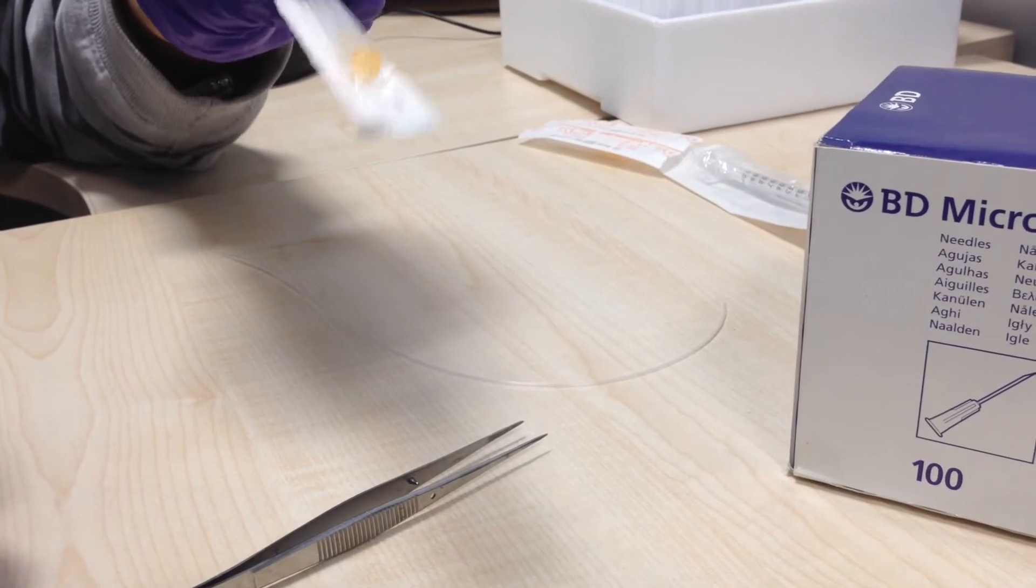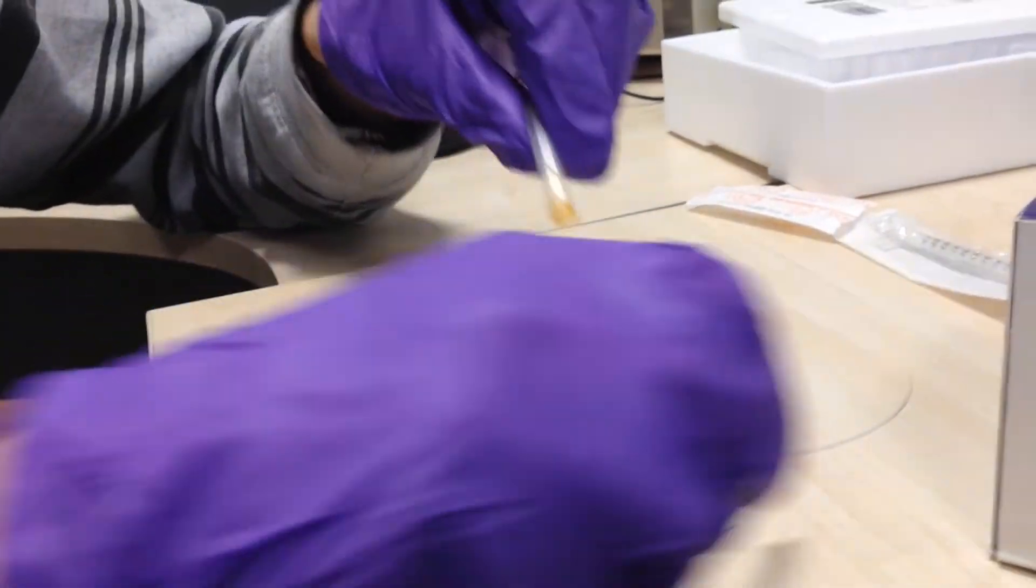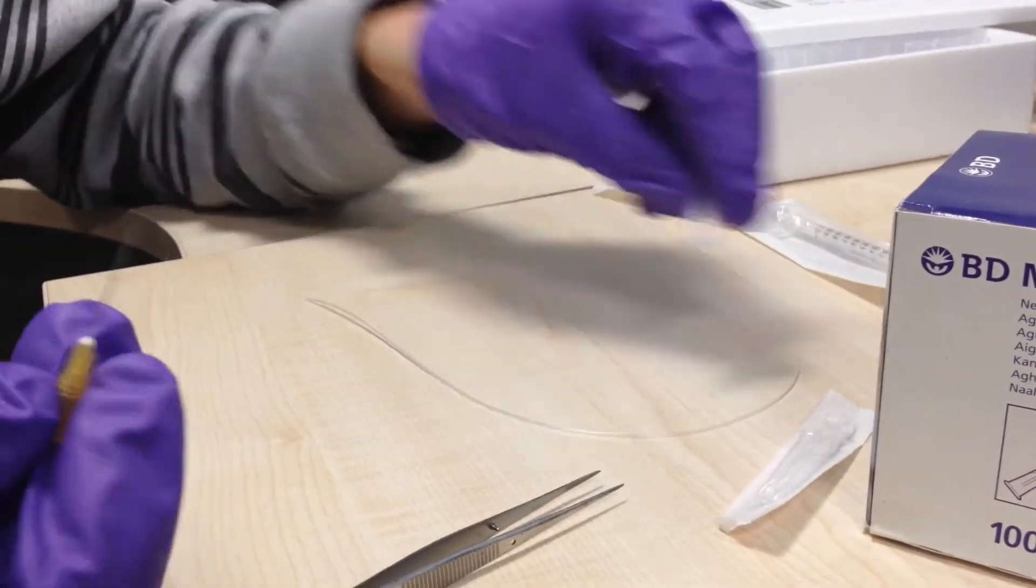Okay, so the first thing you need is one of these Micro Lance 3 gauge needle tips. Take this out. You've got the protective cap.